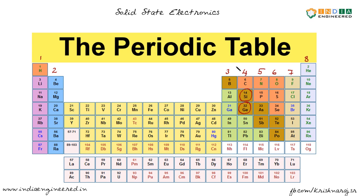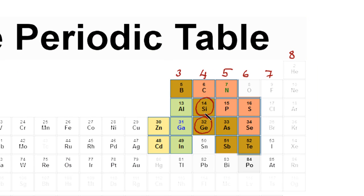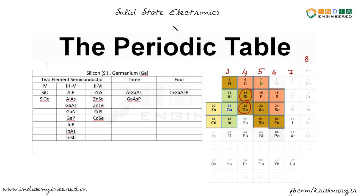We have elemental semiconductors as well as compound semiconductors. We will first see what elements form semiconductor compounds. The common elements that form semiconductor compounds include boron, aluminium, gallium, indium, carbon, silicon, germanium, nitrogen, phosphorus, arsenic, and antimony.